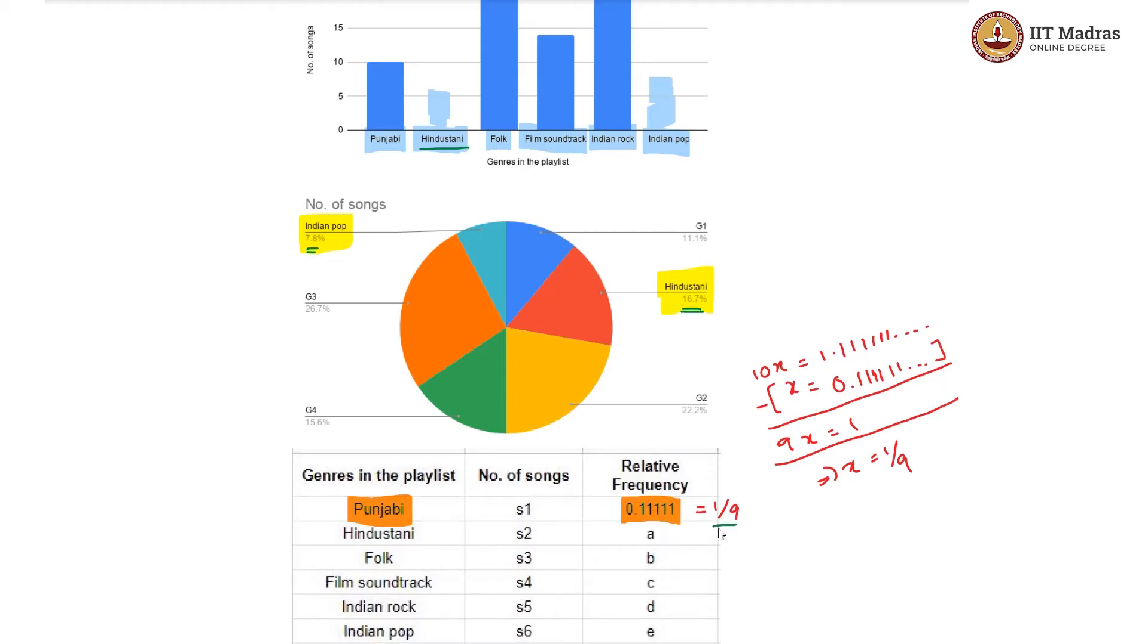Indian pop is also empty and this value is not really going to help us now. But this value, 1 by 9, is going to come and help us here. The Punjabi songs, we know there are 10 of them, because this is where the bar graph is ending. So we know that one ninth of the songs are 10 songs. So if total number of songs are n, then we know that 1 by 9 into n is equal to 10. And that implies n is equal to 90 songs overall.